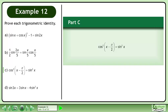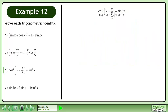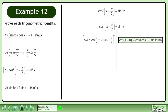In Part C, prove that cos²(x - π/2) = sin²x. Rewrite the statement and draw a line. Expand using the cosine difference identity.